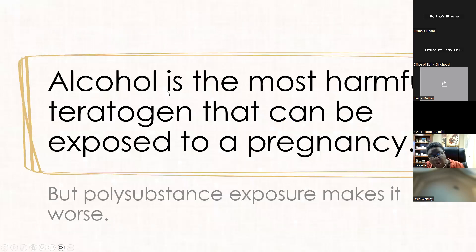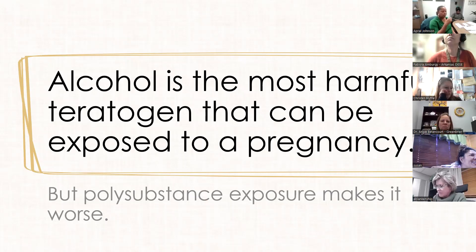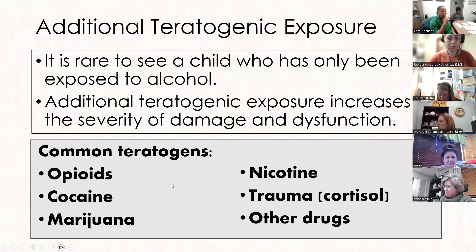Alcohol is the worst thing that can be exposed to a pregnancy — worse than methamphetamines, worse than opioids, worse than cigarettes. Alcohol kills developing cells, resulting in fewer cells and altered function. When you pair alcohol with other substances, you don't just add to the damage, you multiply it, which makes the symptoms of that damage even worse.